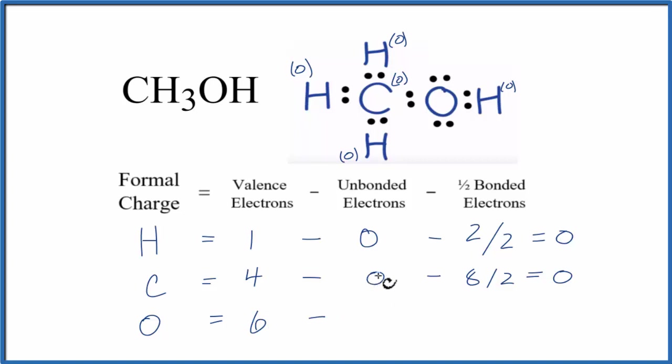Subtract the unbonded. We have a pair here and a pair here. These are unbonded because they're not between atoms, so they're not involved in a chemical bond. We have 2, 4 of those. And then we subtract the bonded valence electrons. We have 2, 4 of those,